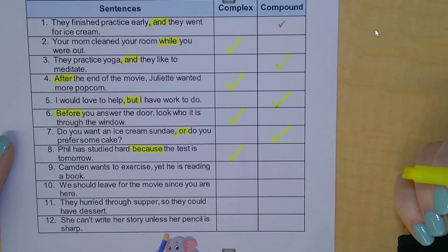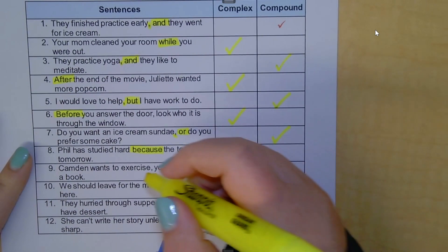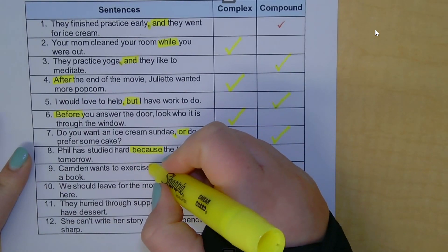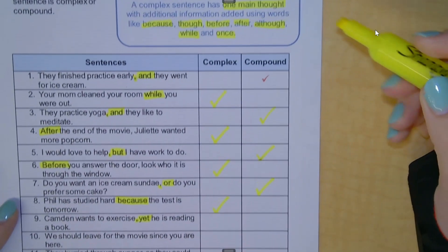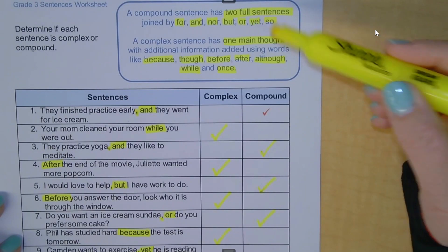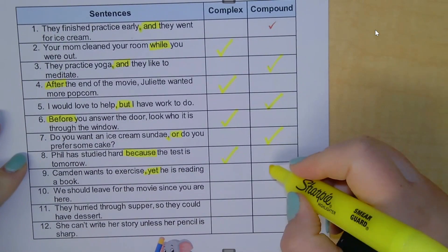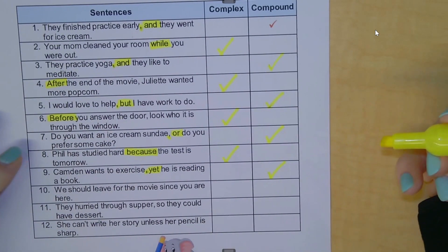Number nine: 'Camden wants to exercise, yet he is reading a book.' Comma plus 'yet' — that is a FANBOY, which tells me this is a compound sentence.